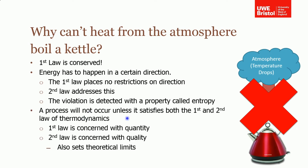A process can't occur unless it satisfies both the first and the second law of thermodynamics. The first law is concerned with the quantity of heat — as long as you've got the same net change all the way around, that's fine. The second law is concerned with quality, in other words direction, and it also sets some theoretical limits of systems.